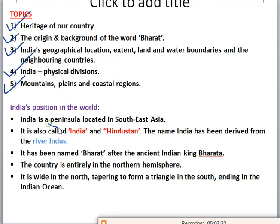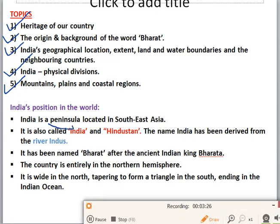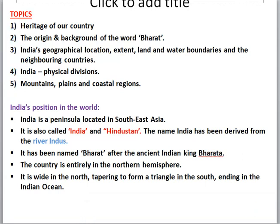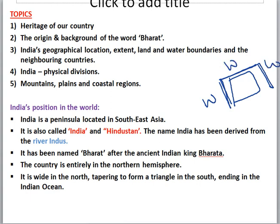India is a peninsula located in Southeast Asia. A peninsula means any area surrounded by water on three sides. India is surrounded by water bodies from three sides. India is also known as Hindustan. The name India has been derived from the river Indus — you must remember that. The word India has been derived from the river Indus.